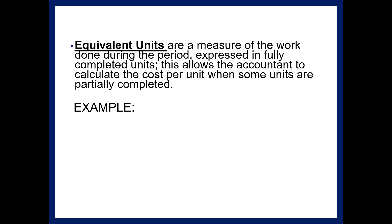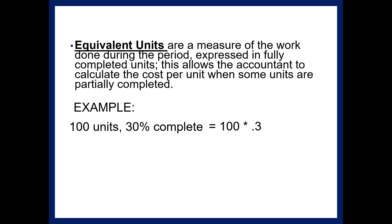Equivalent units are a measure of the work done during the period expressed in fully completed units. This allows the accountant to calculate the cost per unit when some units are partially completed. For example, if you had 100 units 30% complete, the computation would be 100 times 0.3, or 30 equivalent units. The idea is that it costs the same to produce 100 units that are 30% complete as it does to make 30 completed units. This is an accounting assumption for dealing with partially completed inventory.